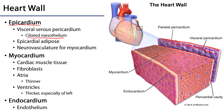Deep to the epicardium, one can find epicardial adipose tissue as well as the vasculature that supplies the myocardium — so the coronary arteries and their branches and the cardiac veins and their tributaries.